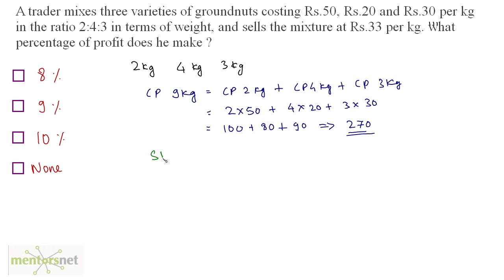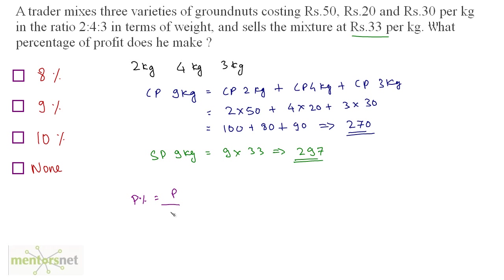Now let us calculate the selling price of 9 kgs. The mixture is sold at Rs. 33 per kg, so selling price of 9 kgs equals 9 times 33, which is Rs. 297. So selling price is Rs. 297 and cost price is Rs. 270. We want the percentage profit, so percentage profit equals profit divided by cost price times 100.